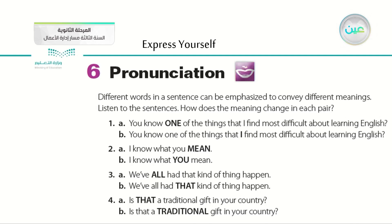We explained the concept of pronunciation — it refers to the way we say or utter a word. In the previous lesson, we focused on how to emphasize certain words in a sentence and how emphasizing one word over another changes the meaning or the message we deliver. For example, in number four A, we emphasized the word 'that': 'Is that a traditional gift in your country?' — asking about the thing. In B, we emphasized 'traditional' to question the traditionality of that gift, so the message changed.